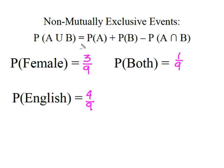So applying this addition rule of probability, I'm simply going to take the three over nine plus the four over nine, and then I'm going to subtract out the one that was both.